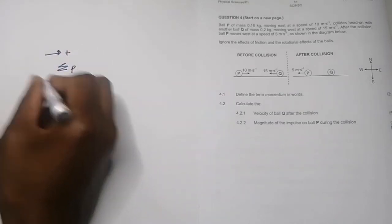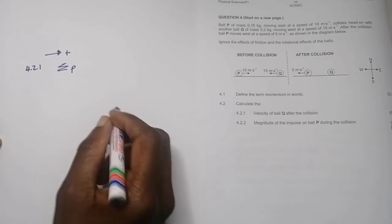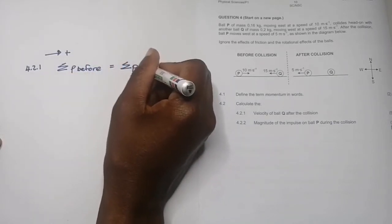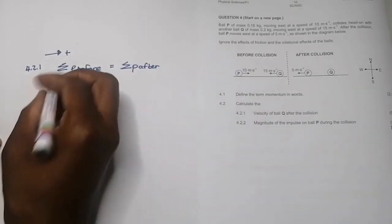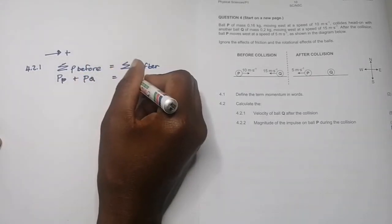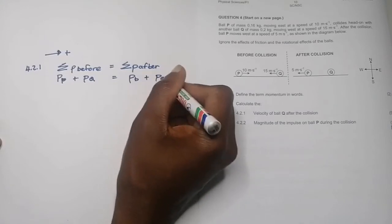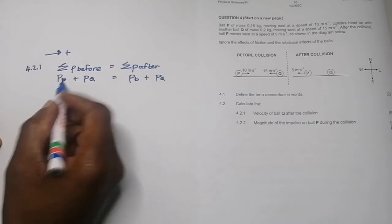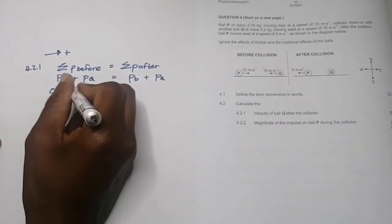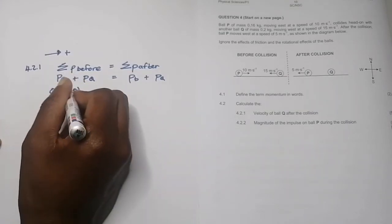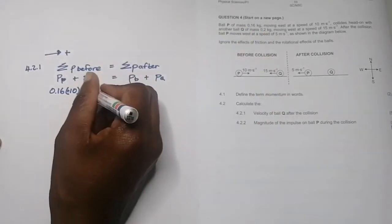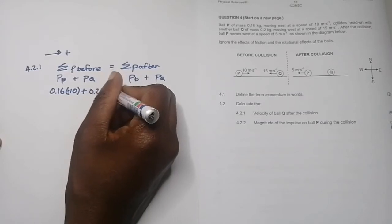We're answering 4.2.1. The sum of momentum before collision is equal to the sum of momentum after collision. I've got ball P and Q, so it's momentum of ball P plus momentum of ball Q, and afterwards we've got momentum of ball P plus momentum of Q. The mass of ball P is 0.16 times velocity of 10 meters per second. We're going to take that as positive. Plus the momentum of Q before collision: mass was 0.2 times negative 15 because this was going in a westerly direction.